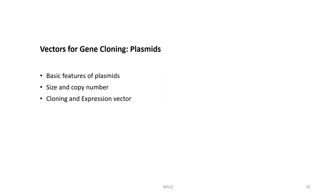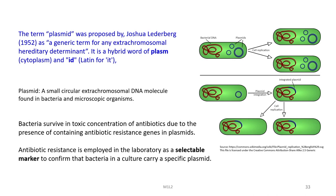There are various kinds of vectors. Let us start with plasmids and look into the basic features of plasmid vectors and important concepts like size and copy number, and different types like cloning and expression vectors. The term plasmid was proposed by Joshua Lederberg as a generic term for any extrachromosomal hereditary determinant. It is a hybrid word from 'plasm' (from cytoplasm) and the Latin 'id,' making the word plasmid, which is basically a small circular extrachromosomal DNA molecule found in bacteria and microscopic organisms.